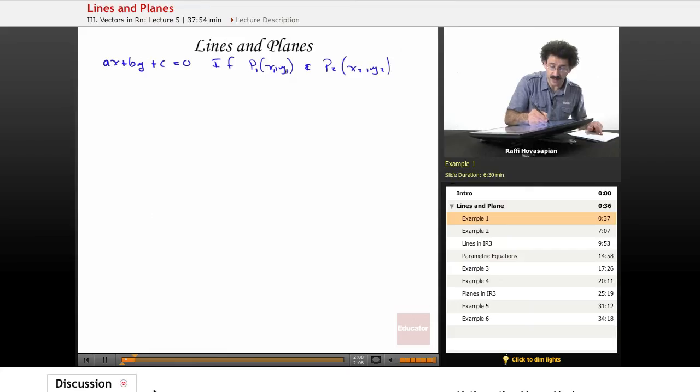You basically just put the X1, Y1 in for X and Y, so you get AX1 plus BY1 plus C equals zero. Actually I don't need that C1 because C is constant. And I have A times X2 plus B times Y2 plus C equals zero. So these two points satisfy, if they're on that line, they satisfy this relation.